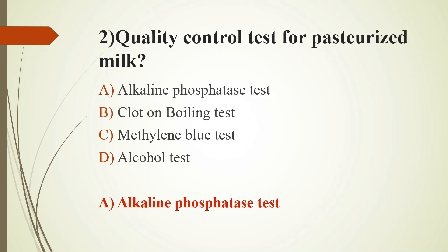Option B: Clot on Boiling test is a rapid platform test for milk and is the oldest method. In this test, a small amount of milk is boiled in a spoon or other container like a test tube. If there is clotting or coagulation, the milk has failed the test. This is due to the presence of acidic conditions or abnormal milk like colostrum milk or mastitis milk.